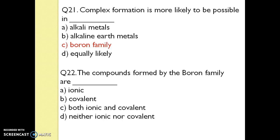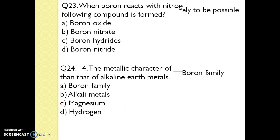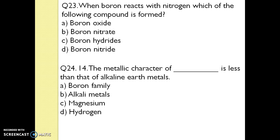Question 22. What type of compounds does the boron family form? The compounds can be both ionic and covalent, so the answer is both ionic and covalent. Question 23. When boron reacts with nitrogen, which compound is formed? Boron nitride is formed, so the answer is boron nitride. Question 24. The metallic character of which family is less than that of the alkaline earth metals? The answer is the boron family.